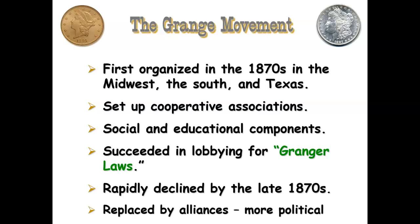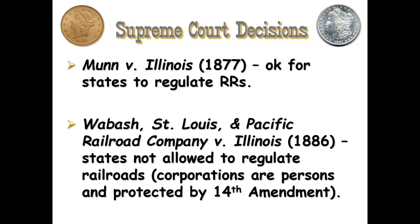The Grange movement will be replaced by something known as farmers alliances, which start regionally and then start to merge — a much more political movement. The Supreme Court decisions that will really activate this politically: first is the Munn v. Illinois case, where it's okay for states to regulate the railroad. It seems like some of the Grange movement is going to have some impact and they'll be able to, within certain states, have regulations over the railroad. But by 1886, that's completely thrown out the window.